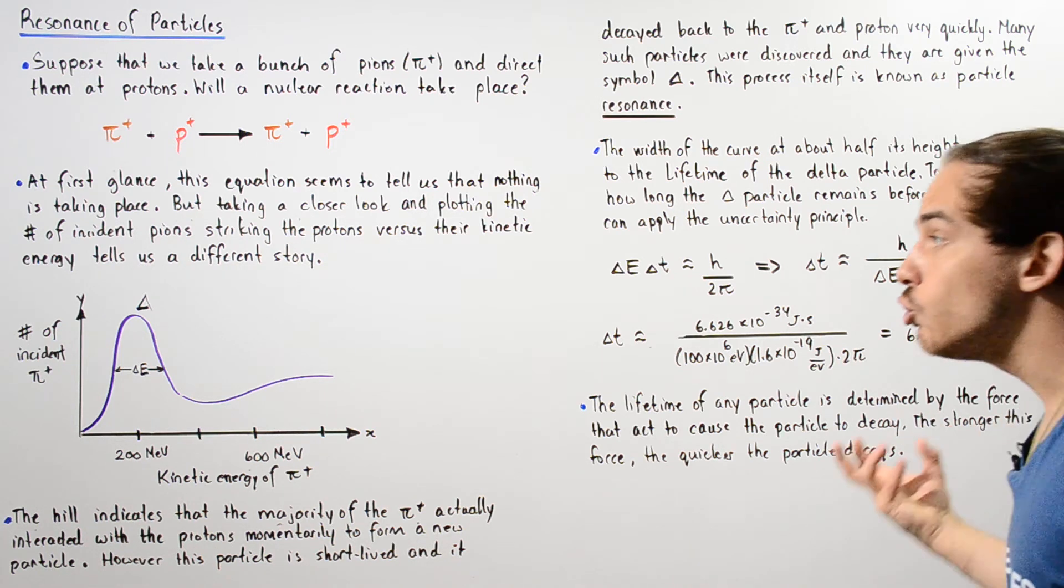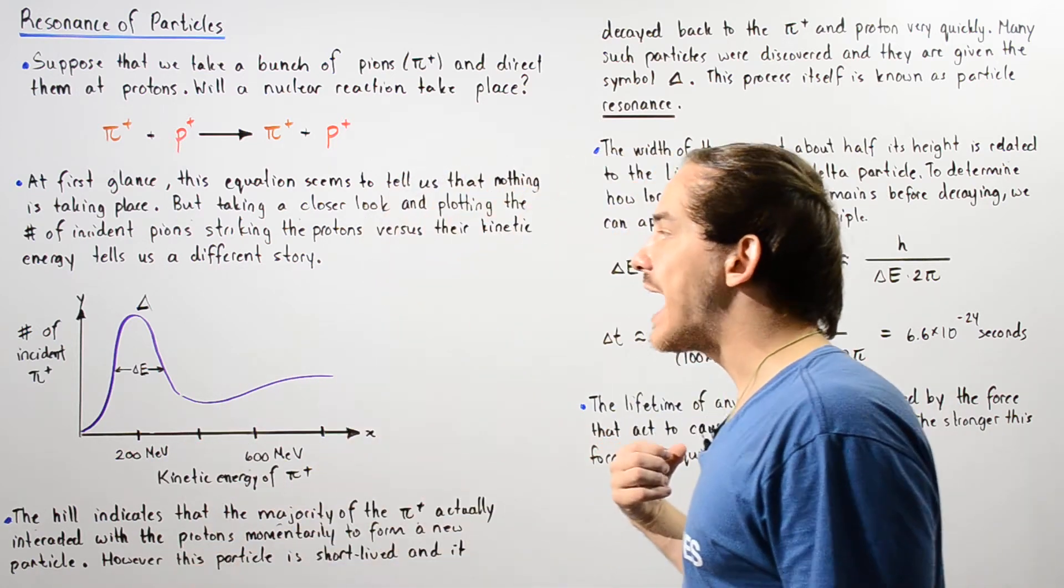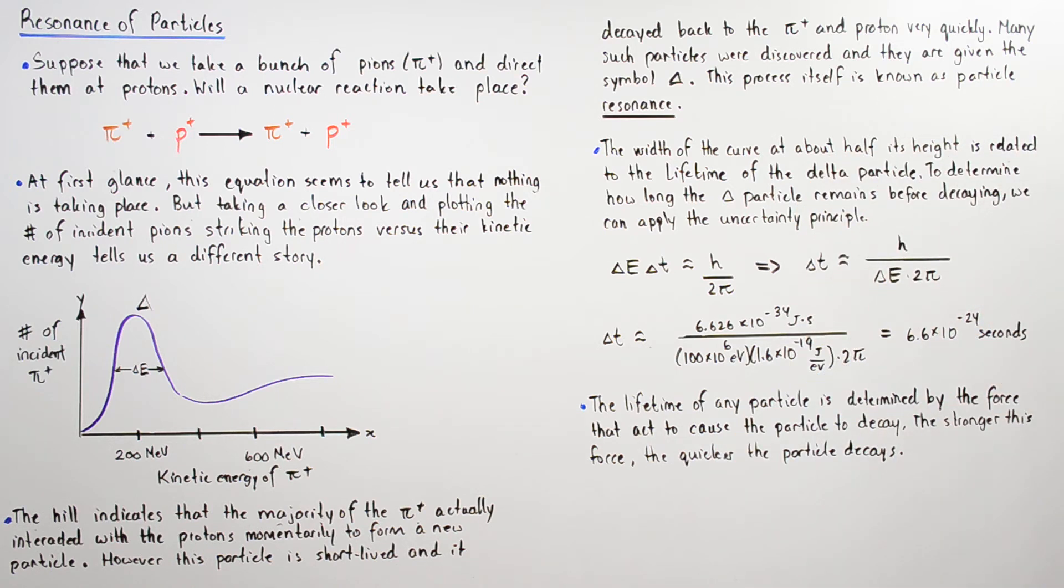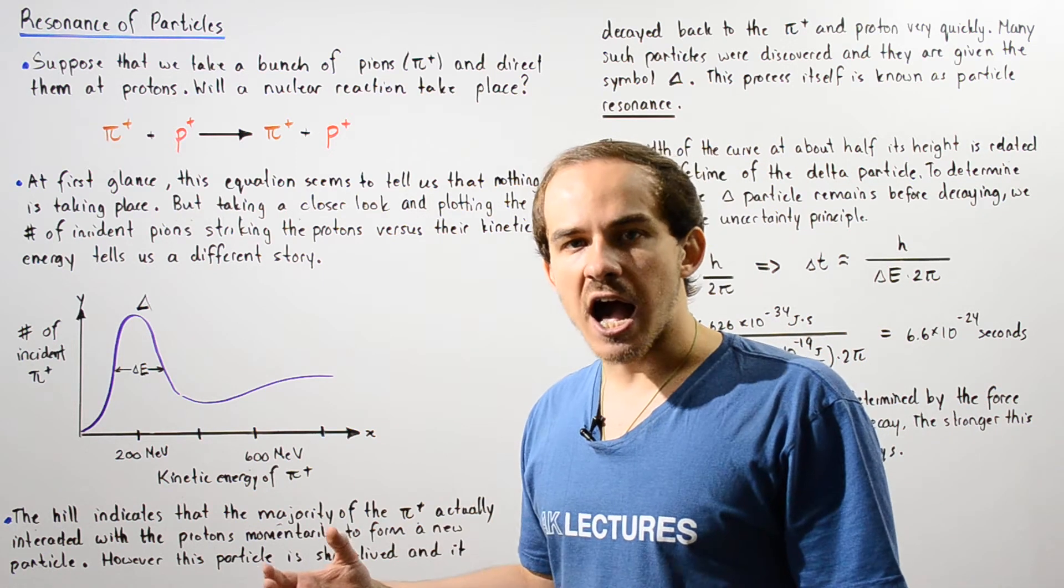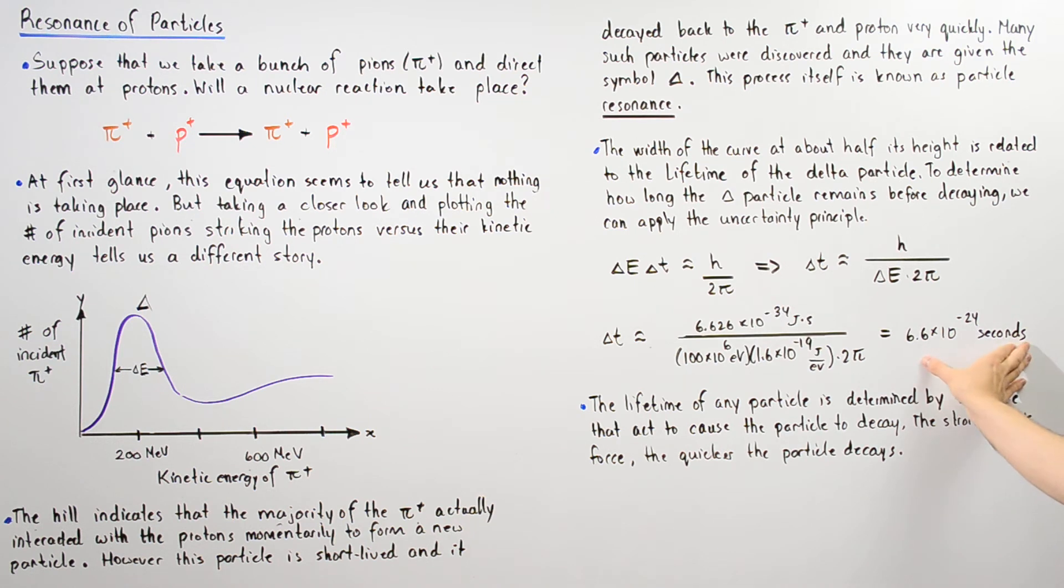So this is how long the delta particle exists before actually undergoing that decay, and we see that this period is a very short interval. Now what exactly determines the lifetime of our particle? What determines how long or short this time interval is?